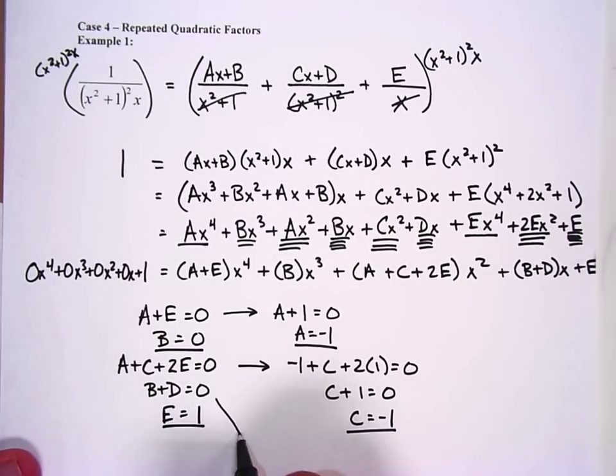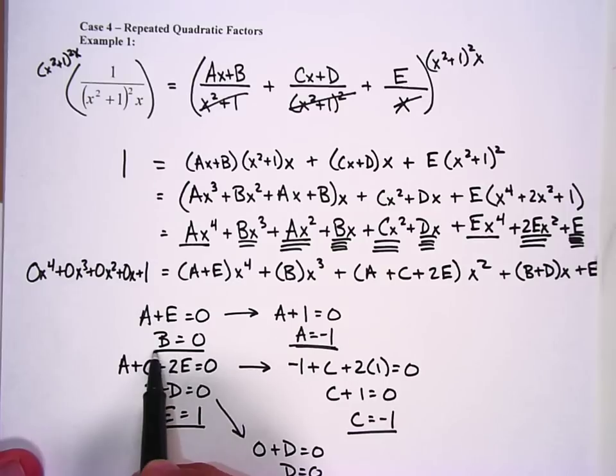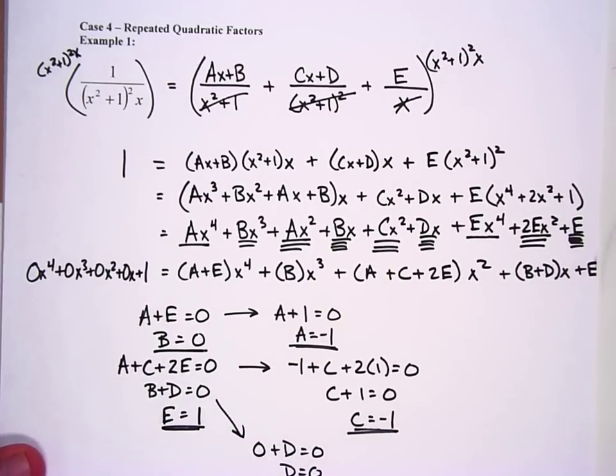And then right here, I can say b, which is zero, plus d equals zero. D must equal zero. So I have a equals negative one, b equals zero, c equals negative one, d equals zero, e equals one.